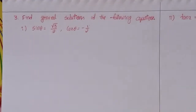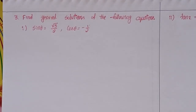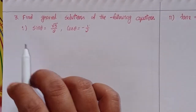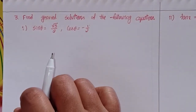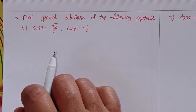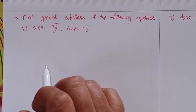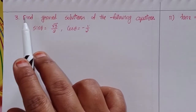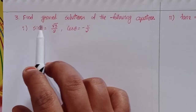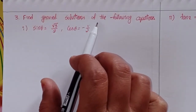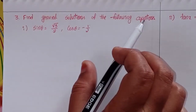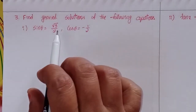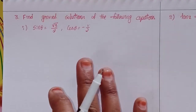Hi viewers, this is Shahin and welcome to my channel. Today I will discuss Intermediate First Year 1A, Chapter 7: Trigonometric Equations, Exercise 7A — the first worked problem: find a general solution of the following equations.